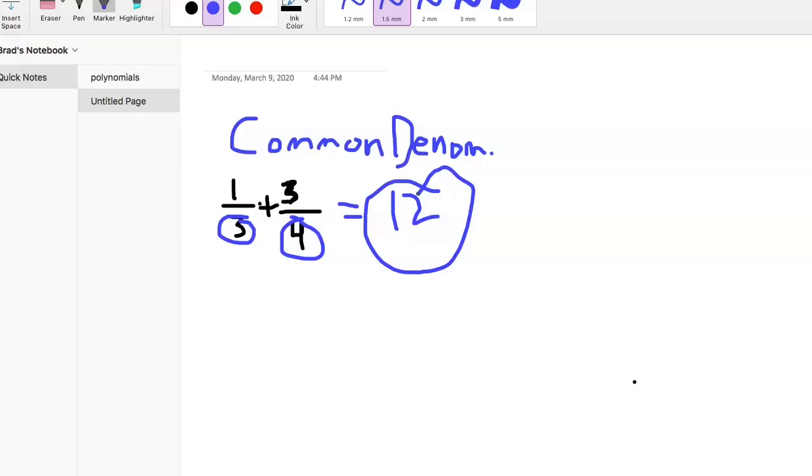We'll talk about how to actually go through the process of solving this later. But for right now, all I want you to know is that when you're trying to solve for the common denominator, this means that both of the numbers on the bottom will be 12.